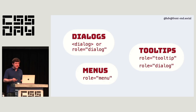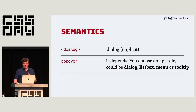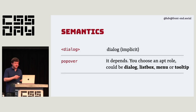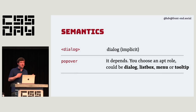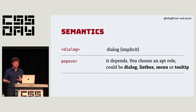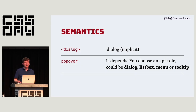To summarize the semantic options: a dialog element has the dialog role built in. When you have a popover, you need to choose from several options — dialog, listbox, menu, tooltip, or others. This is not an exhaustive list, but these are probably the most common ones to use together with your popover attribute.